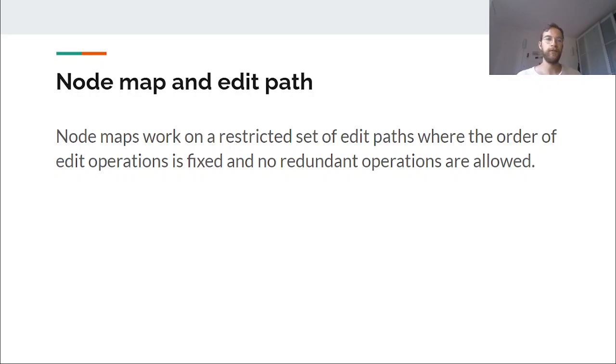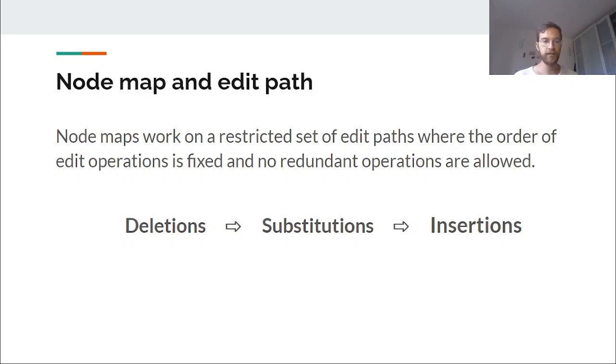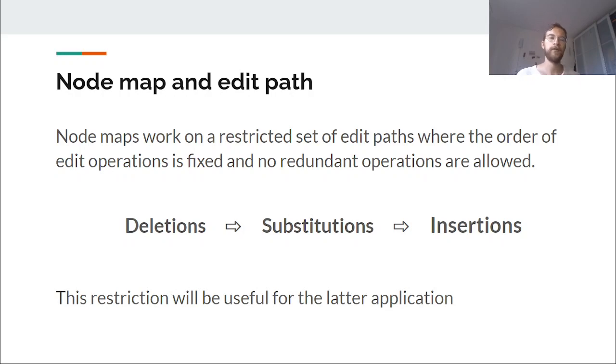And one important thing is that they order the operations because of the restrictions they make on the edit paths. So that deletions are made first, then substitutions, then insertions. It makes a lot of sense and it will be useful for our implementation. Particularly because we will use something that we call default node maps. I will talk about that later. So yeah, it will be kind of crucial for our implementation.